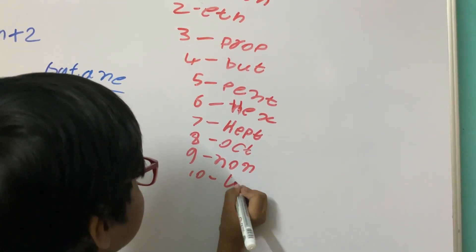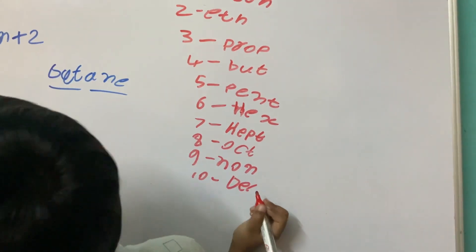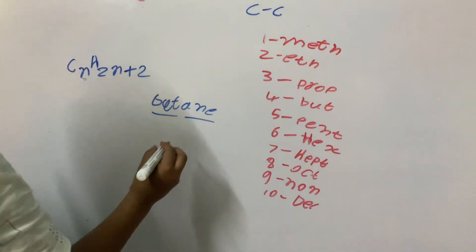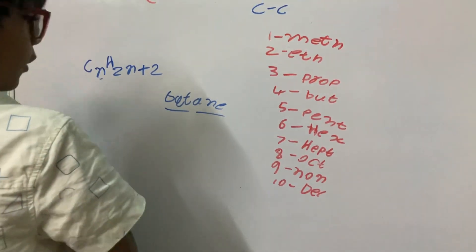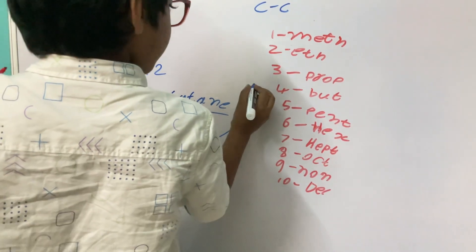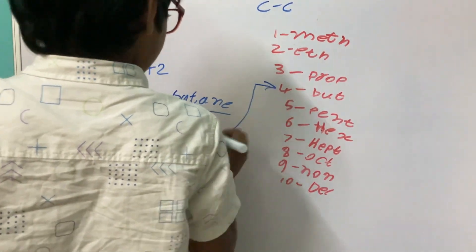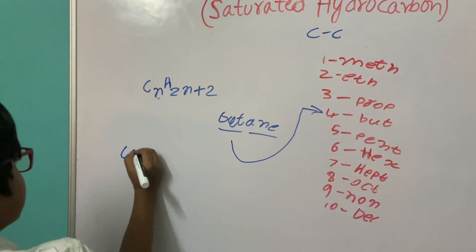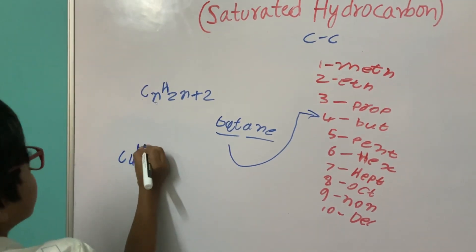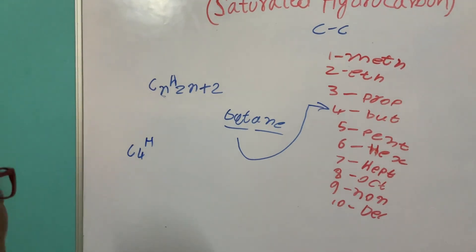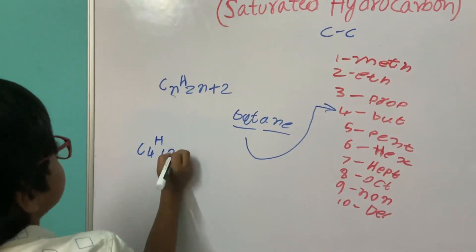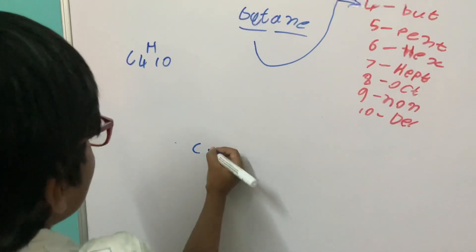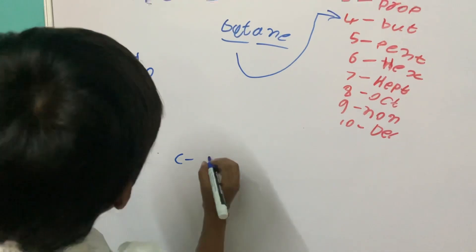For 10, it's Dec. So for butane, n equals 4. Two times 4 is 8, plus 2 is 10. So there are 4 carbon atoms and 10 hydrogen atoms in butane.